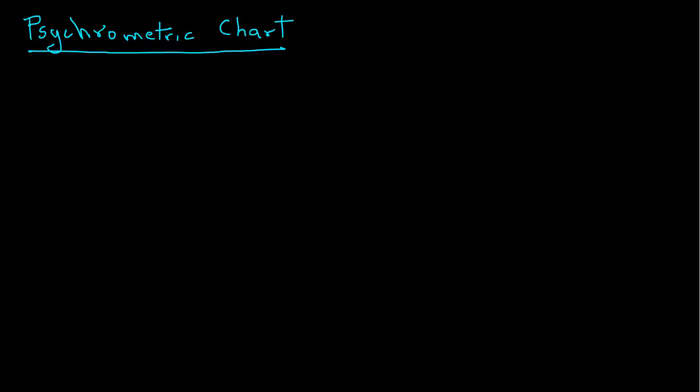So let's begin by first drawing a skeleton outline for a psychometric chart. First we draw a horizontal line and then a vertical line on the right hand side and extend it at the top with a horizontal and then draw a curve on the left hand side. This is a skeleton of a psychometric chart.